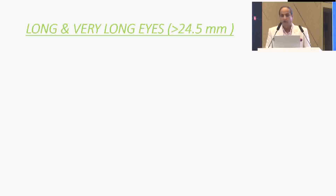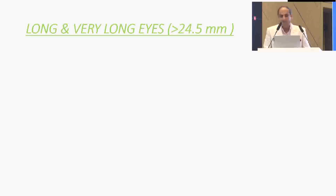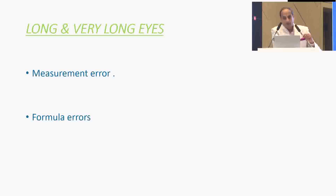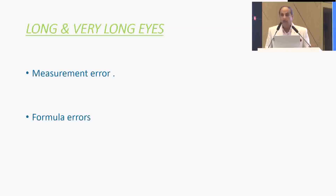Let's start with the long eyes. When do we identify an eye as a long eye? We mean that the actual axial length is more than 24.5 millimeters. What are the issues with an eye which is more than 24.5 mm? Well, there are two issues: there could be a measurement error, and there could be formula errors, because as the eyeball grows we need to have a different and very specific formula.